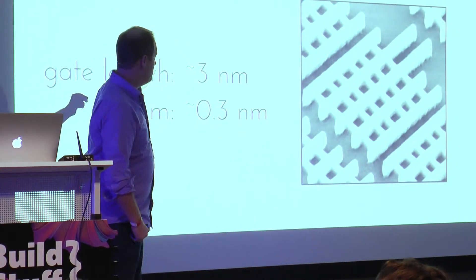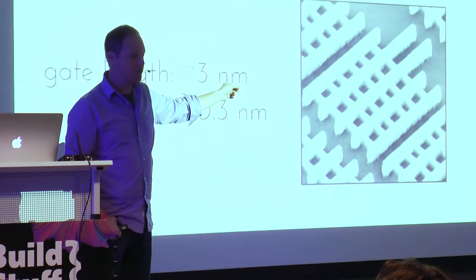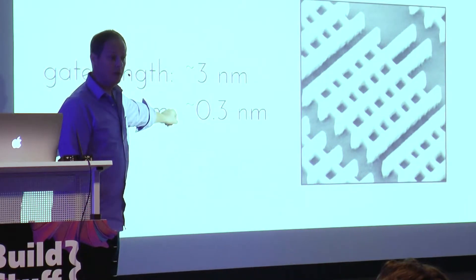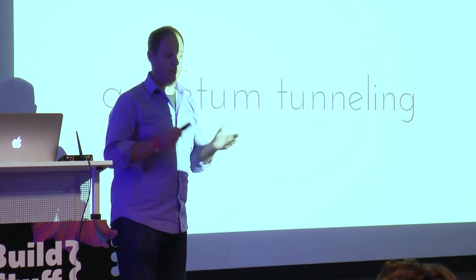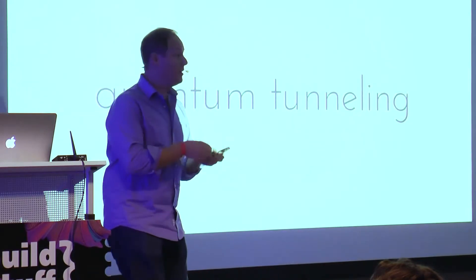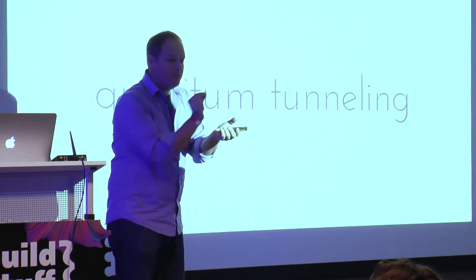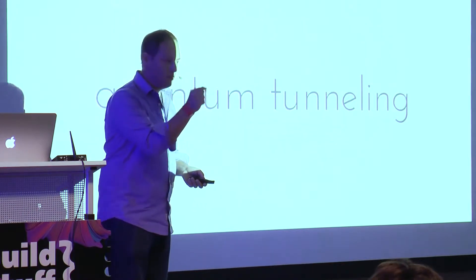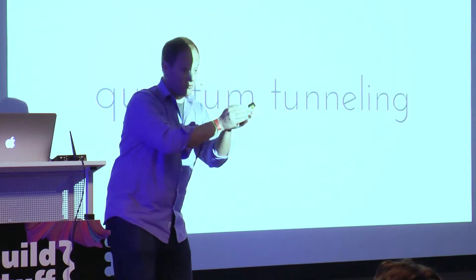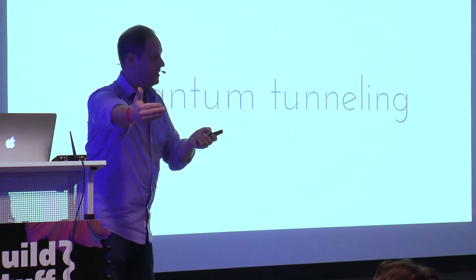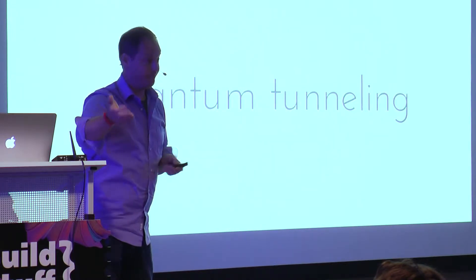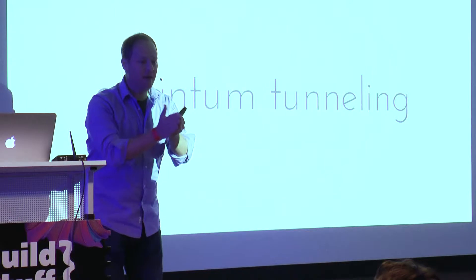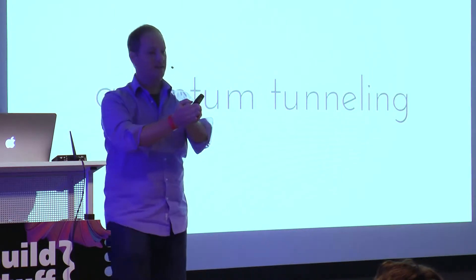Three nanometers is 2,000 times smaller per transistor than we had in the mid-1970s. The problem is we're talking about 10 atoms across, and we start to see issues with quantum tunneling — where we expect electrons and particles to flow through gates, but the gates are so small that sometimes these particles will appear on the other side of the gate. We start having errors because of physics. What that means is we can't keep making transistors smaller or CPUs faster.